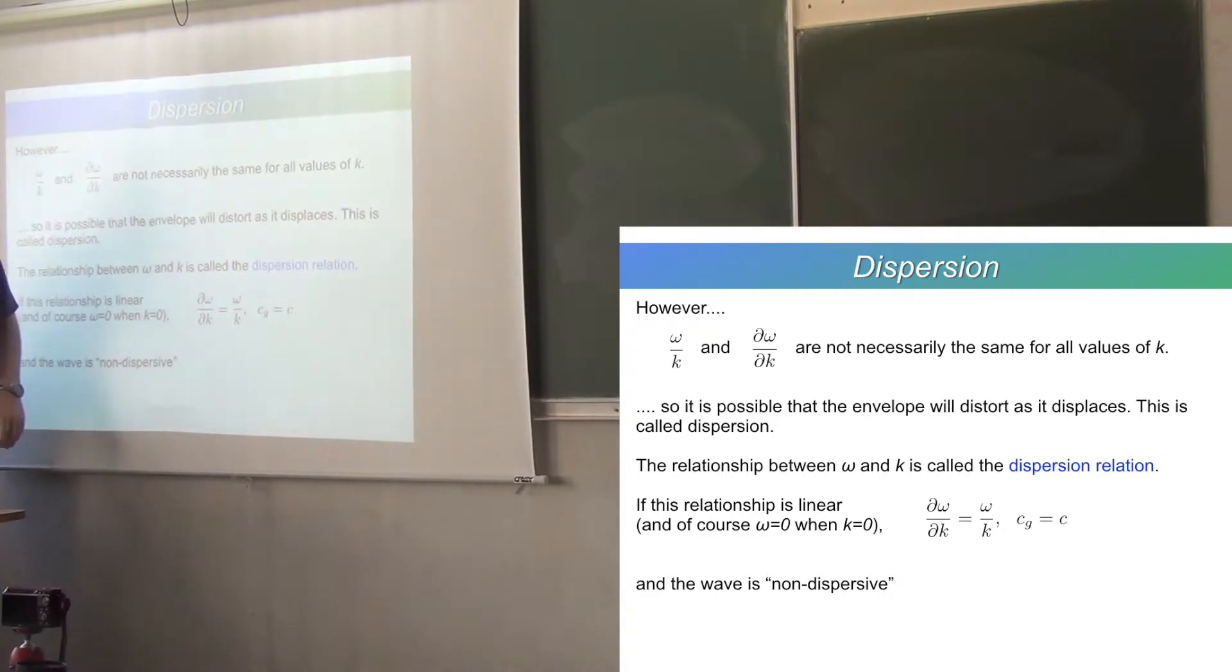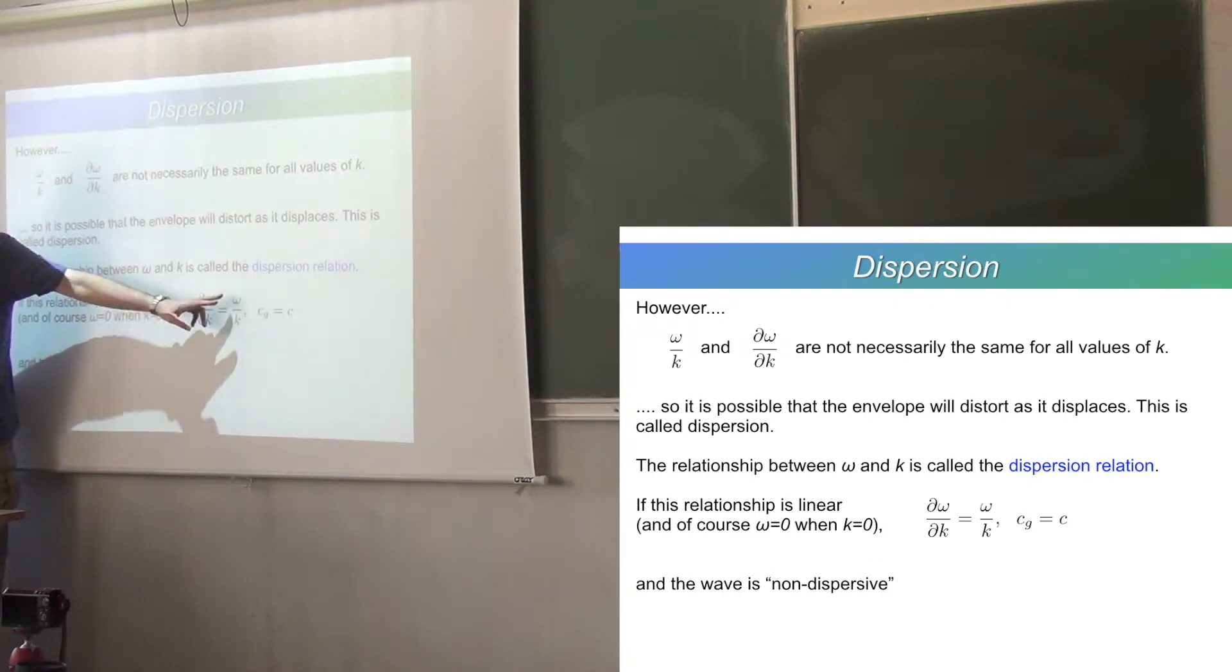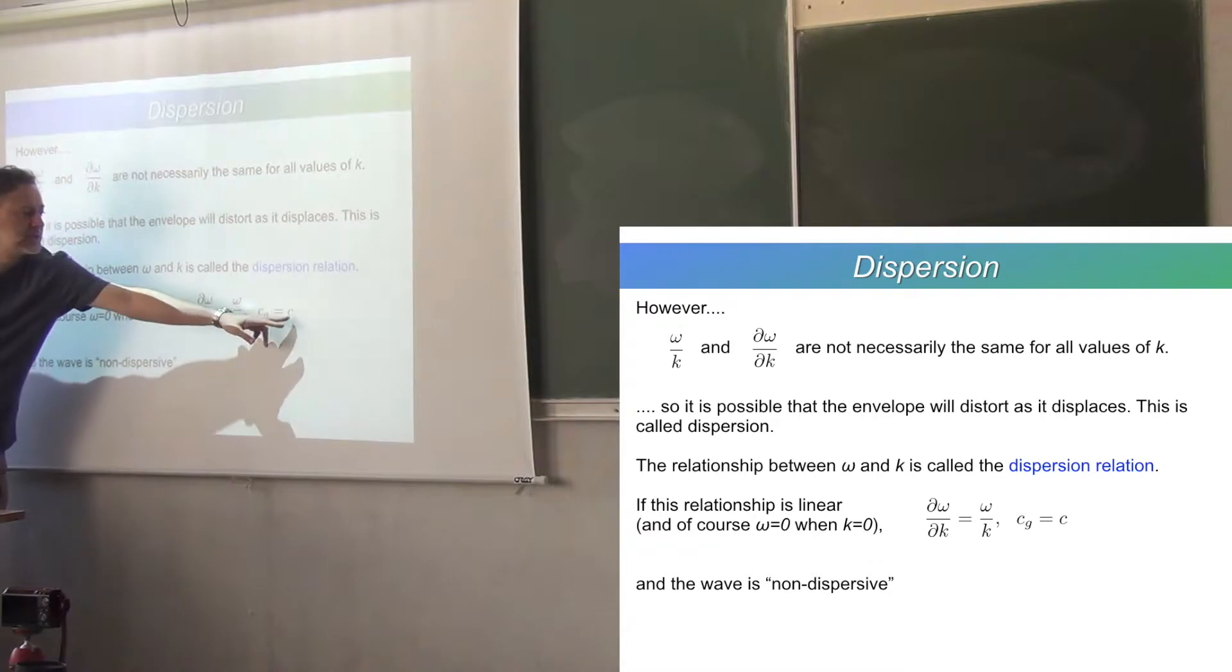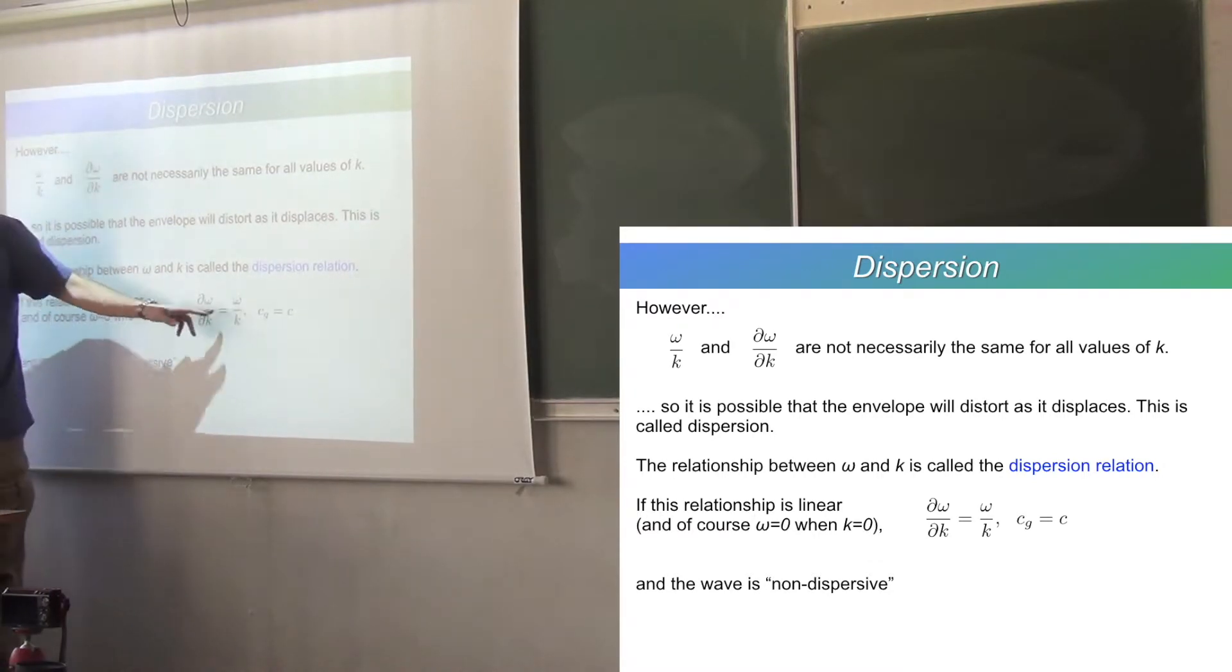And if, on the other hand, you have a system where the short waves and the long waves go at the same speed, well, what is it? It's the omega by dk equals omega over k. You have a linear relationship between omega and k. So, in that case, everything collapses. You have a phase speed which is equal to the group speed which is independent of frequency and wavelength.